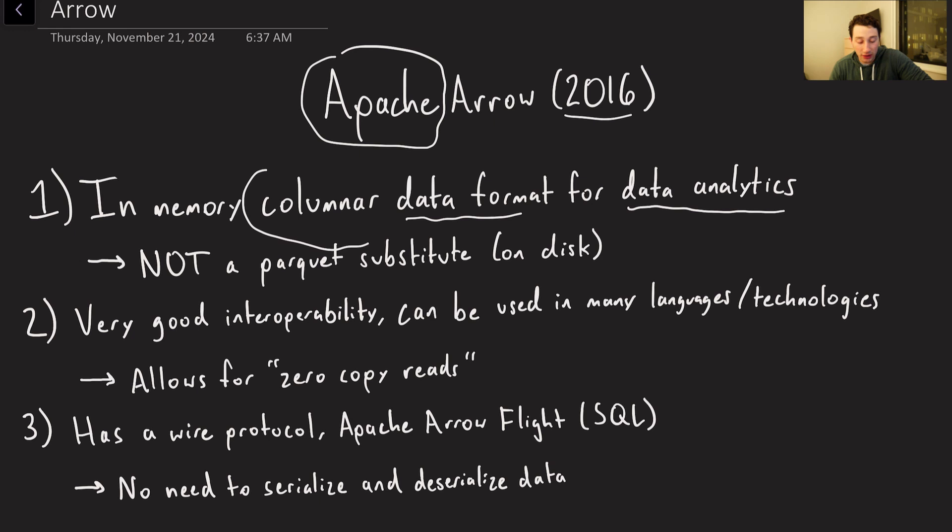It's an in-memory columnar data format specifically for data analytics. One thing that's important to note is this explicitly is not a Parquet substitute. Parquet is specifically a file format for disk storage, and this is made for in-memory. Arrow really focuses on interoperability, which means you can read and write data in one program and then instantly read and write that same data in another program without having to copy, translate, serialize, or deserialize it. This allows for zero copy reads. They also implemented something known as Flight, or Flight SQL, which extends Arrow so you can send it over the network, avoiding serialization and deserialization of data into bytes.